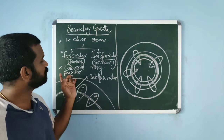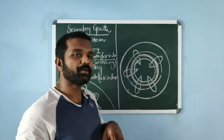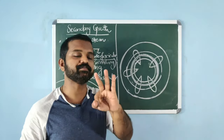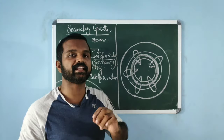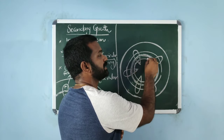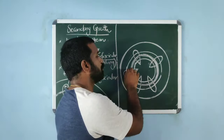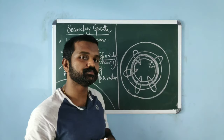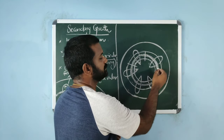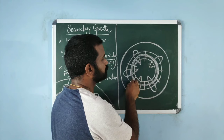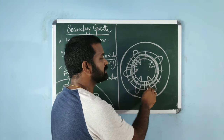Now let us see the activity of the cambium ring. From the cambium ring, three types of tissues are formed: towards the inner side it forms secondary xylem, towards the outer side it forms secondary phloem, and in radial directions it forms secondary medullary rays, which pass through secondary xylem and secondary phloem.